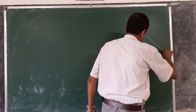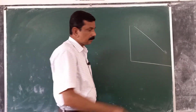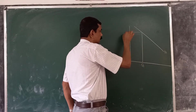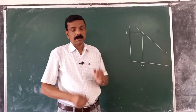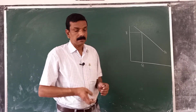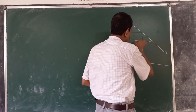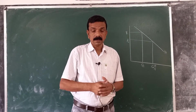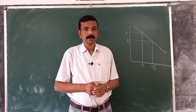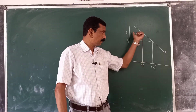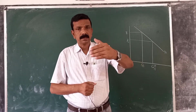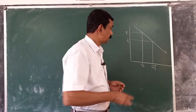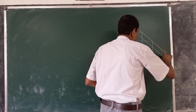Suppose the demand curve is D1. When the price is P1, quantity is Q1, and the perceived increase in quantity is Q star 1. But as price falls from P1 to P2, those consumers purchasing the commodity for conspicuous consumption are now less interested in the commodity.